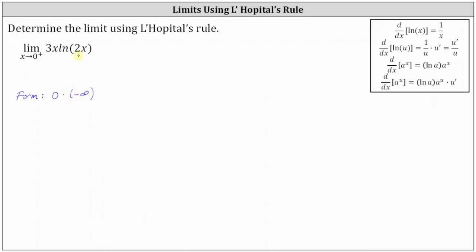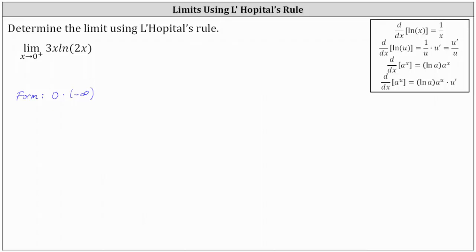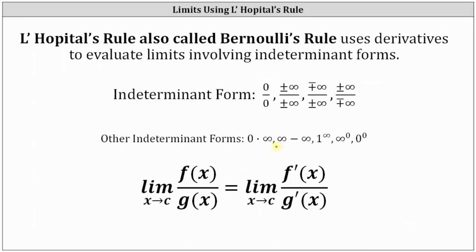For a quick review, if we graph y equals natural log 2x, notice as we approach x equals 0 from the right, the function values do decrease without bound and approach negative infinity. So the given limit is in the form of 0 times negative infinity, which is an indeterminate form, but we have to have the limit in one of these indeterminate forms where we have a ratio in order to apply L'Hôpital's rule. So we'll have to change the form of the function before we apply L'Hôpital's rule.